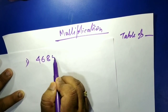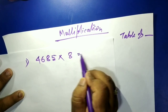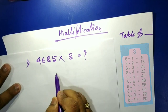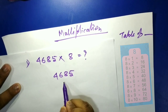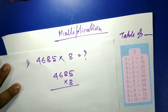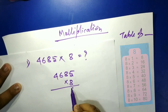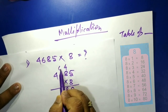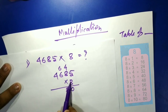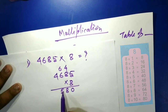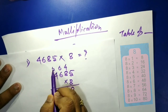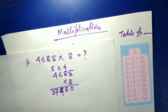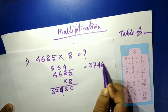Next: 468 into 5, so we need the table of 8. 8 fives are 40 — write zero, carry 4. 8 sixes are 48, plus 4 is 52 — write 2, carry 5. 8 fours are 32, plus 5 is 37. Wait — let me recalculate: 5 eights are 40, 5 sixes are 30 plus carry, 5 fours — answer is 2340.